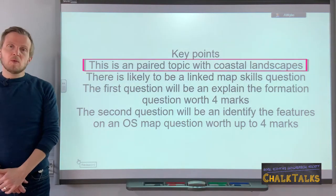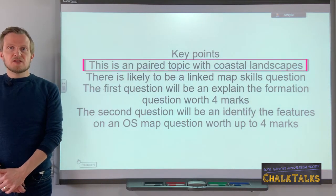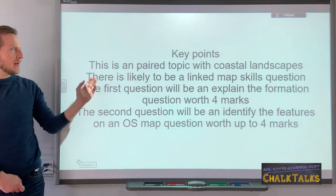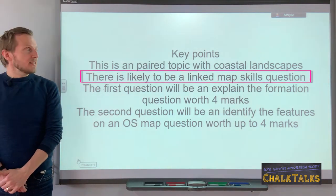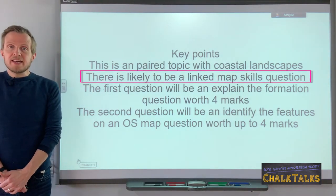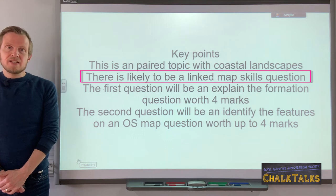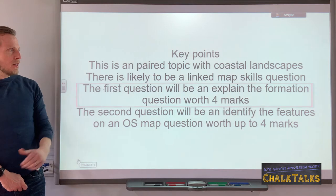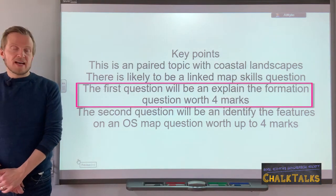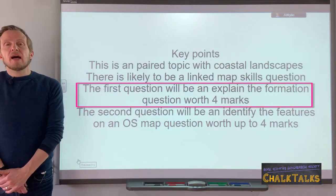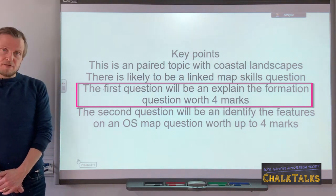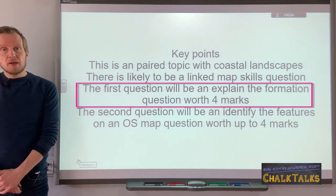This is a paired topic with coastal landscapes and you will have studied both of these landscapes together. You should therefore avoid question two in the exam. It will likely be linked to your ability to read an Ordnance Survey map and identify the main glacial landscape features using the OS map. The first question you encounter in the exam is very possibly going to be the requirement to explain the formation of a glacial landscape feature, and this question is typically worth four marks.